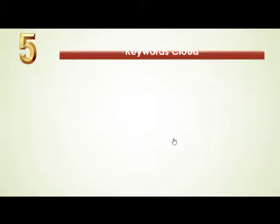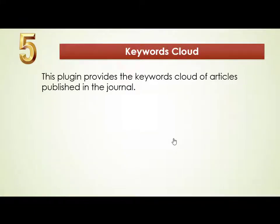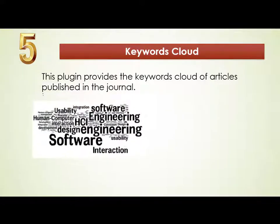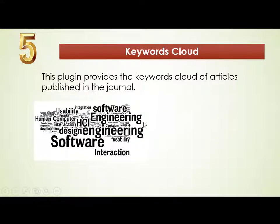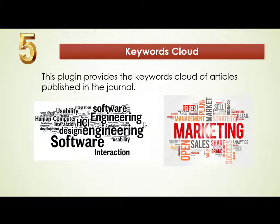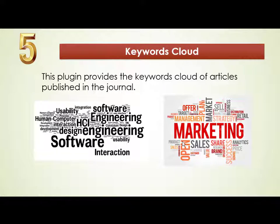The fifth and very important plugin is the Keyword Cloud. This keyword cloud displays a visual cloud of keywords from articles published in the journal. It allows readers, reviewers, and potential authors to see what kinds of papers are being published. For example, if someone is interested in software, the cloud will indicate that this journal has a high frequency of papers related to software.